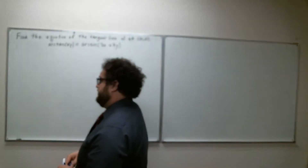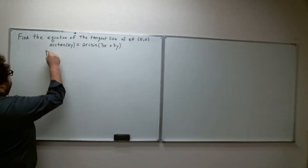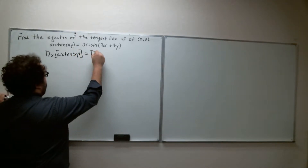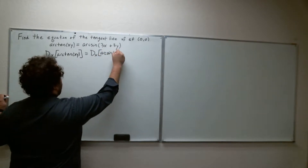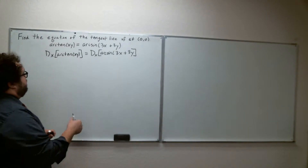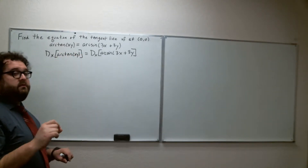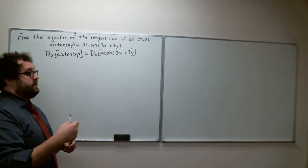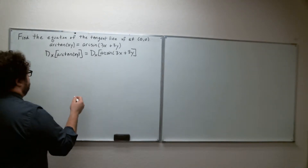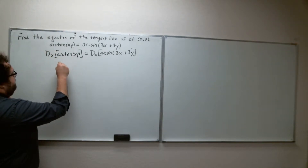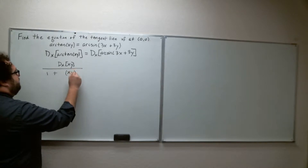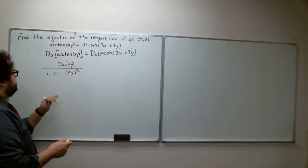We take the derivative of arctan(xy) equals the derivative of arcsin(3x + 3y), both with respect to x. This requires the chain rule because we don't have just the derivative of arctan — we have the derivative of arctan(xy). Recall that the derivative of arctan is u-prime over 1 plus u squared. Here u is xy, so the left-hand side becomes the derivative of xy over 1 plus (xy) squared.